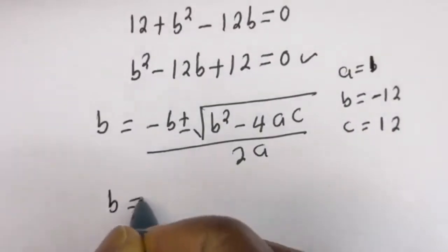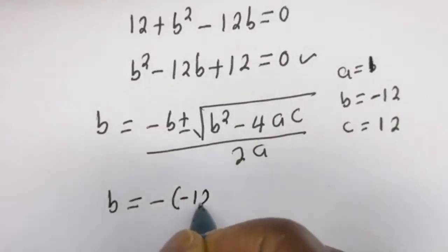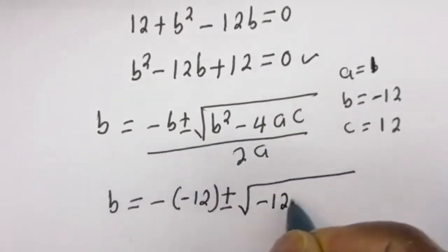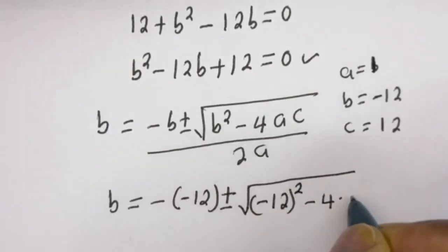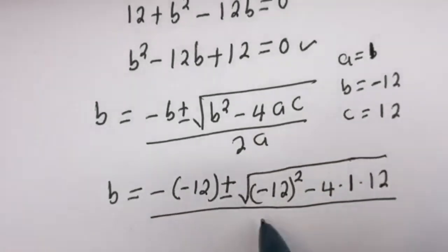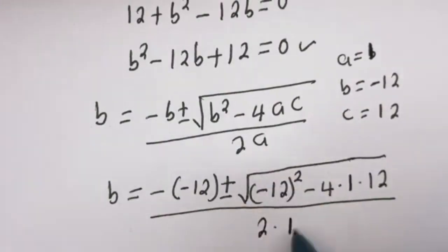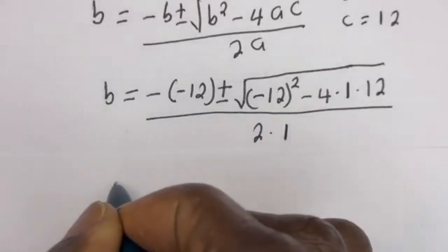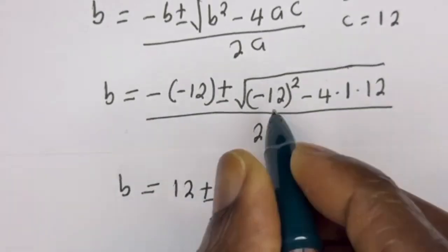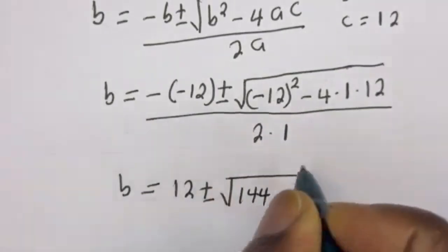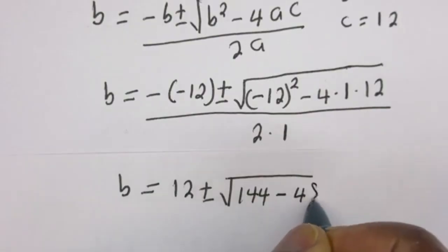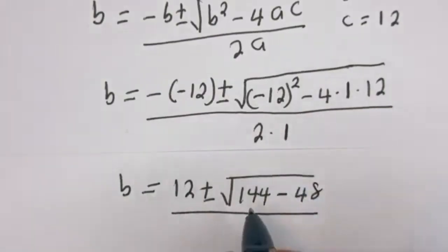Then b is equal to minus negative 12, plus or minus square root of negative 12 squared, minus 4 multiplied by 1 multiplied by 12, all divided by 2 times 1. That gives us 12 plus or minus square root of 144 minus 48, divided by 2.